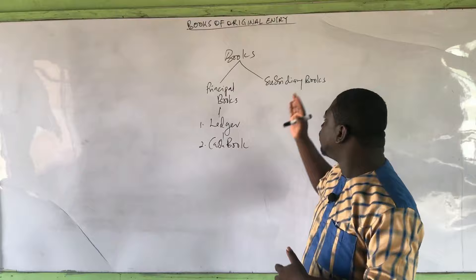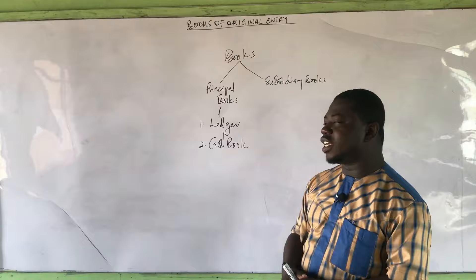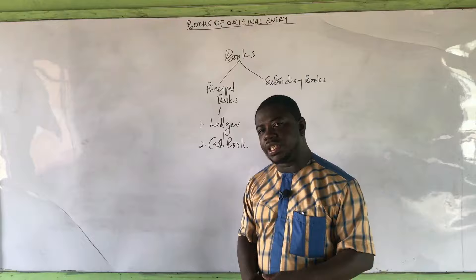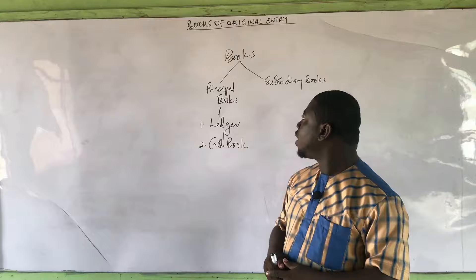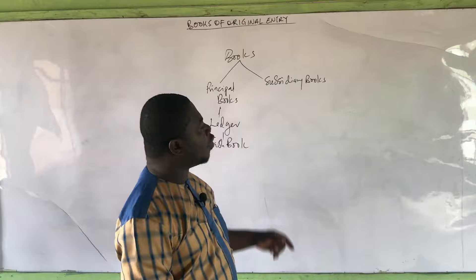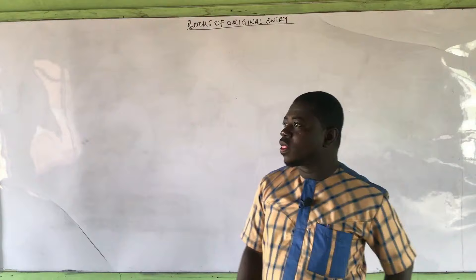The subsidiary books do not follow the double entry system. They are books that transactions are first recorded into before they are posted into the principal books. We are first going to learn how to record transactions into the subsidiary books, also called the books of original entry. In our next video we will learn how to post transactions from the subsidiary books into the ledger. We've already done the double entry, the two-column and three-column cash book. What remains is the petty cash book, which I'll cover in a different video.